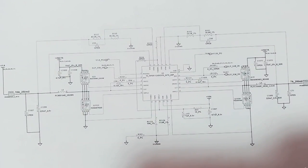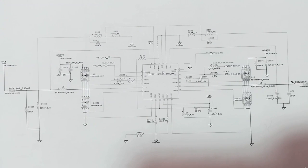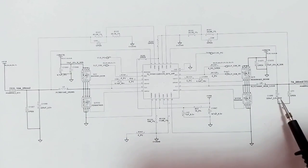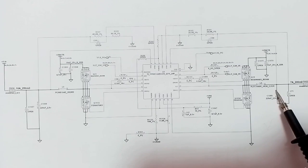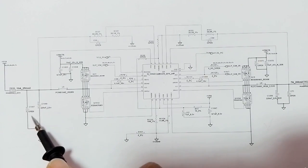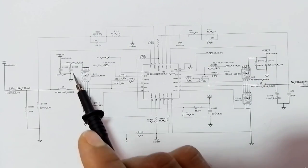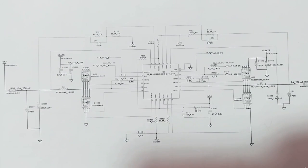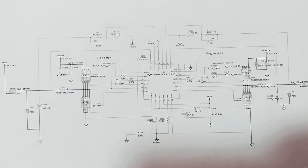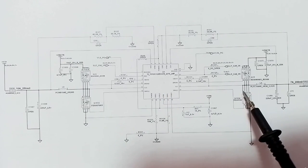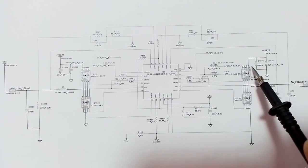For troubleshooting this circuit, the probable components that can cause a failure are: the IC, the two MOSFETs for each channel, and the capacitors — which could be shorted to ground. So if you have a short circuit or a failure in this circuit, you should check the IC, the MOSFETs, and these capacitors.